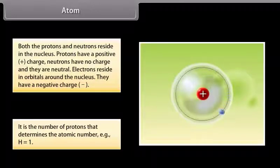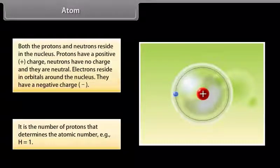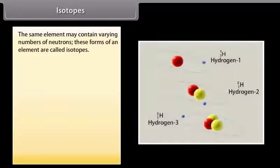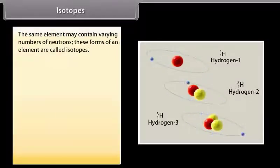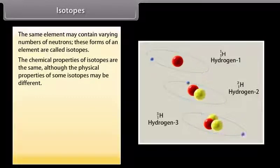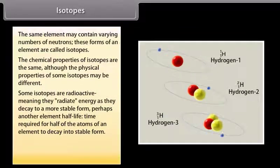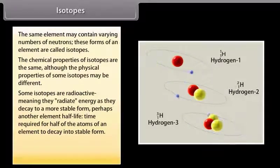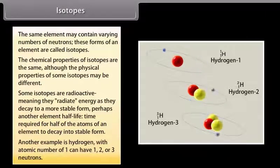It is the number of protons that determines the atomic number — for example, hydrogen H has atomic number equal to 1. The same element may contain varying numbers of neutrons; these forms of an element are called isotopes. For example, hydrogen with atomic number 1 can have 1, 2, or 3 neutrons.